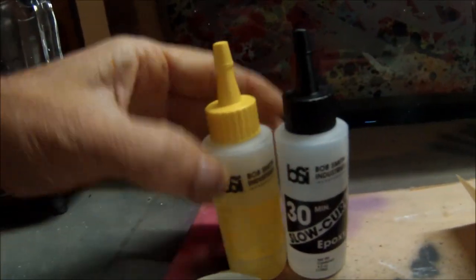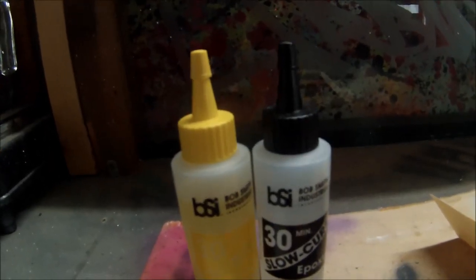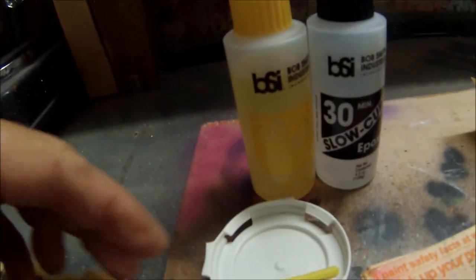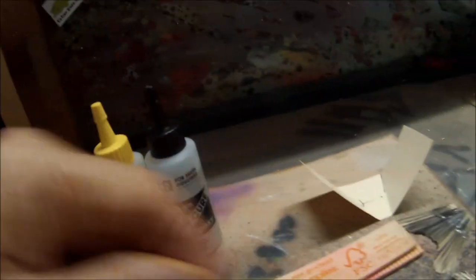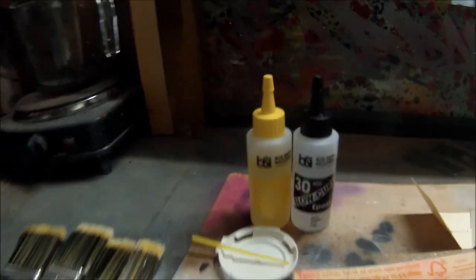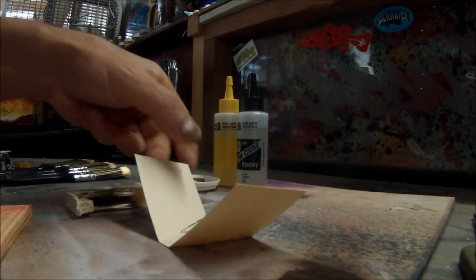Next thing you need is I got some BSI Bob Smith Industries two-ton epoxy and a little lid and a little mixer. I'll put a little bit of this in here and I'll mix it up and I'll use that to put on here and I'll show you guys how I do all this.